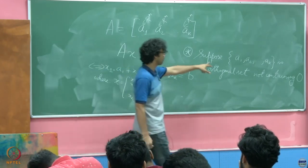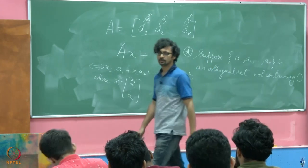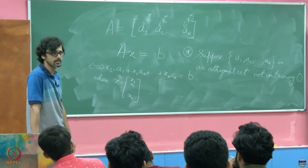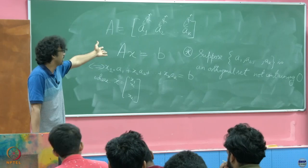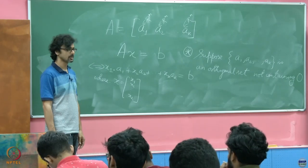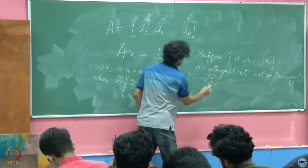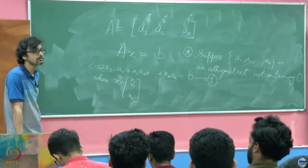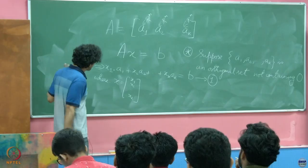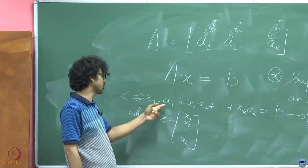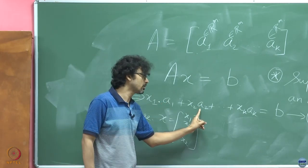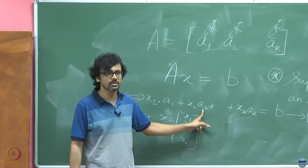Now that we've been given that this is an orthogonal set, what do we go ahead and do? Orthogonality comes only in the case of inner products, so obviously there is an inner product in this space — and these are just dot products in real vector spaces. Take the dot product of both sides with any Ai. Every time we take the dot product with any Ai, its inner product with the other Aj will vanish because of orthogonality.